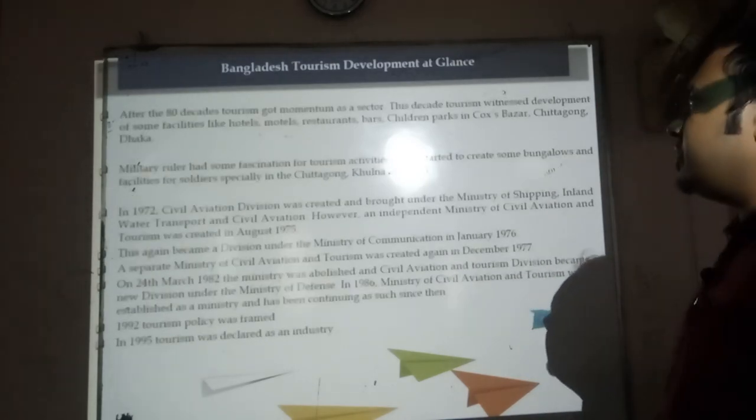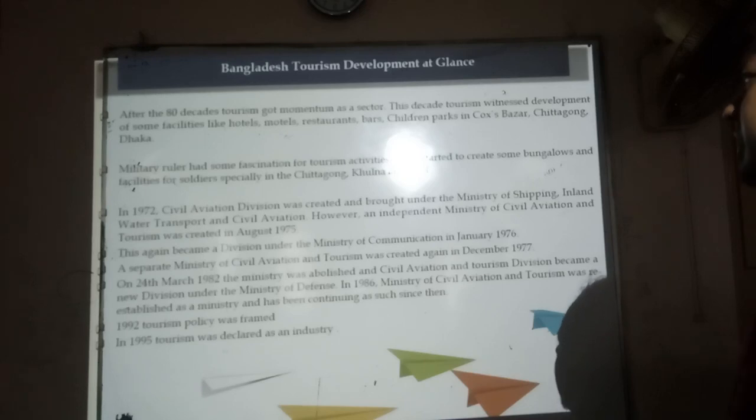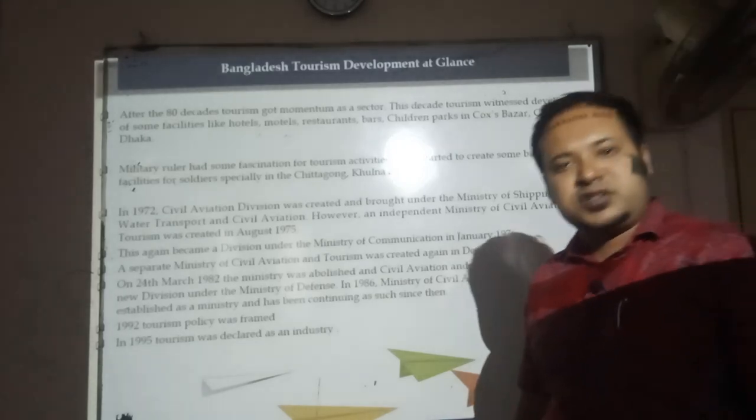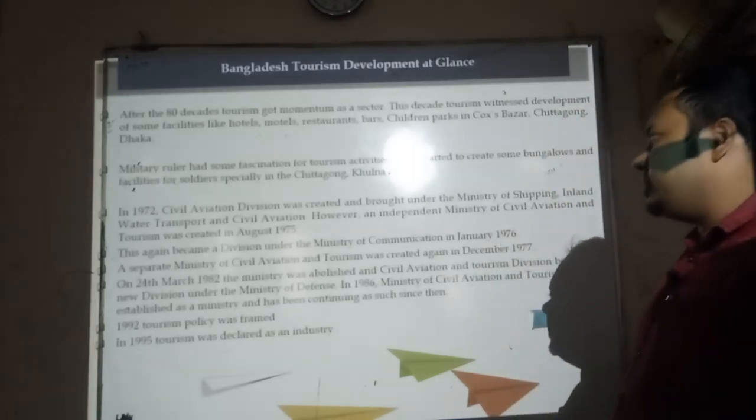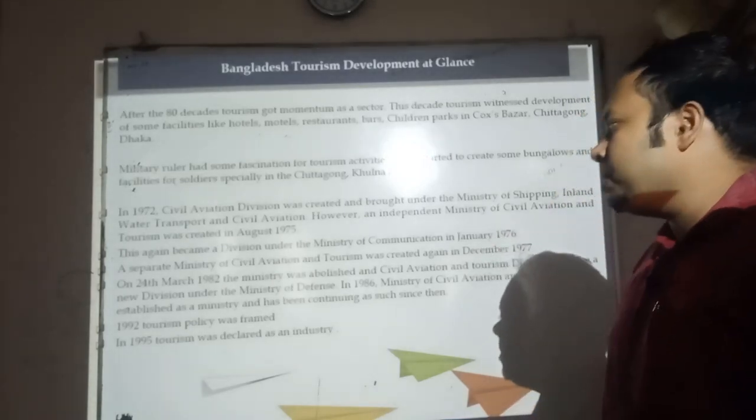After gaining momentum, the tourism sector developed all over the world. Cox's Bazar, Rangamati, Khagrachhari, and Bandarban have also developed their infrastructure and superstructure. In 1972, the Civil Aviation Division was created. The Ministry of Civil Aviation and Tourism has done a lot of development to promote the tourism industry in our country. In 1992, a tourism policy was framed, and in 1995, tourism was declared as an industry in our country.